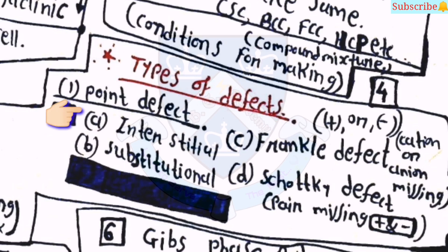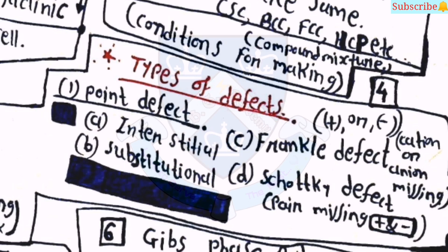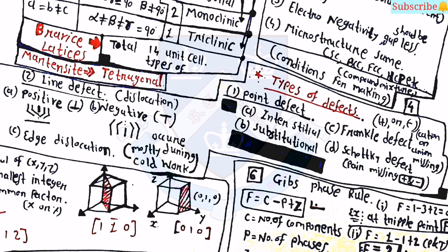Types of defects are also important. Point defects include: interstitial defect, substitutional defect, Frenkel defect (where one atom is missing from its lattice site and moves to an interstitial position), and Schottky defect. Line defects include three types: positive dislocation, negative dislocation, and edge dislocation. Edge dislocations mostly occur during cold work processes.